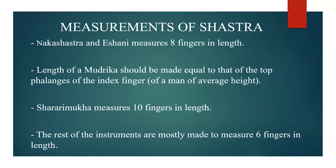Next are the measurements of Shastra. Nakshastra and Eshani should measure 8 fingers in length. The length of Mudrika Shastra should be made equal to that of the top phalanges of the index finger of a man of average height. Shararimukha measures 10 fingers in length, and the rest of the instruments are mostly made to measure 6 fingers in length.